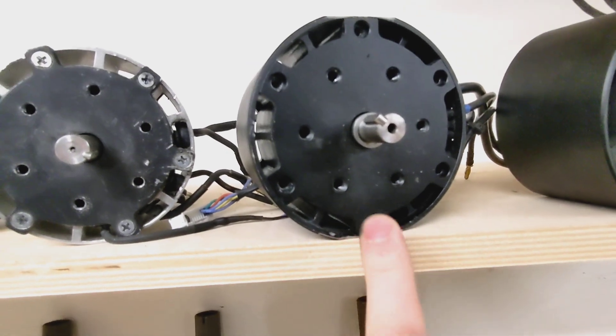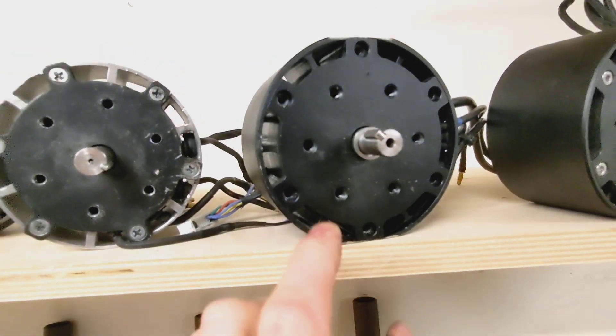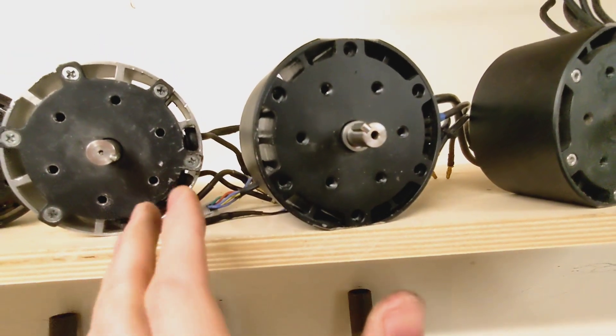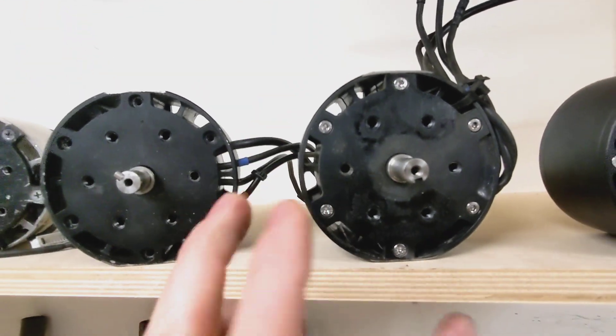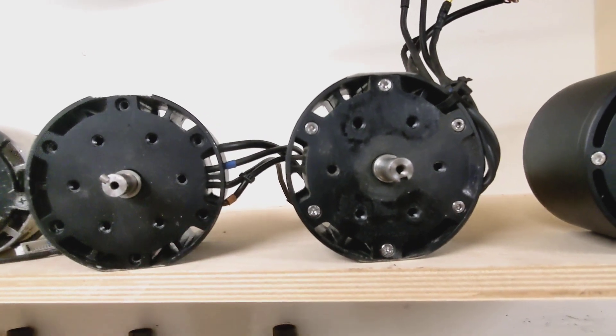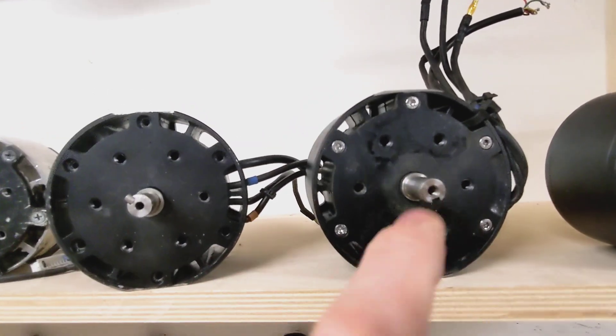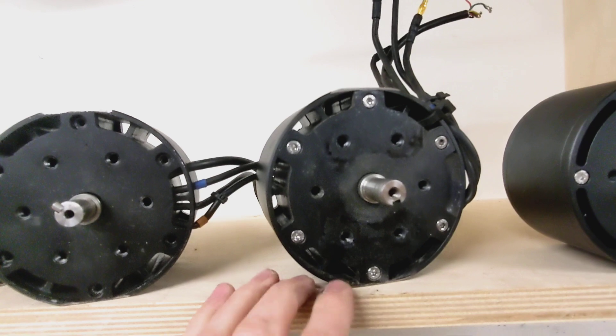This first motor that we got from them is 169 kV, and we didn't love the Hall sensors on it. So the second generation that we had them make for us is 120 kV, which worked great for the new transmissions we had been developing at the time, and had much better Hall sensors.